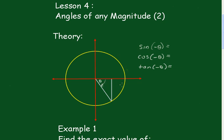Now we know that they're all positive in the first quadrant. All positive here. The sine is positive here. The tan is positive here. And the cos is the only one positive in the fourth quadrant.